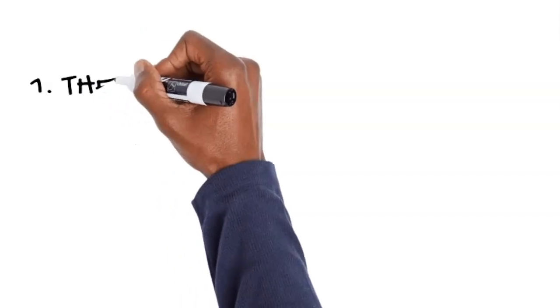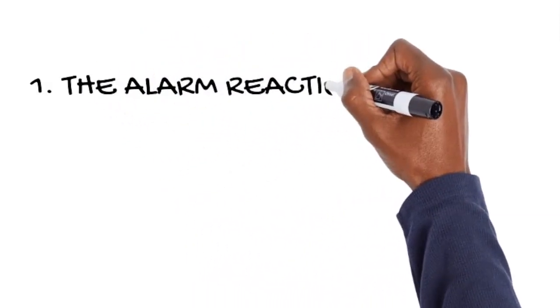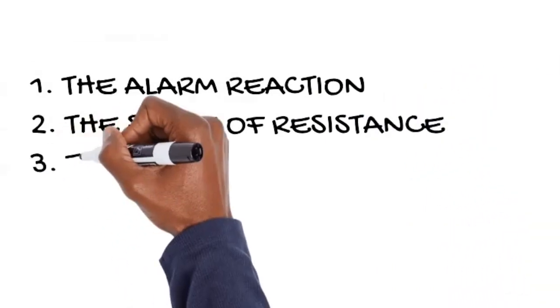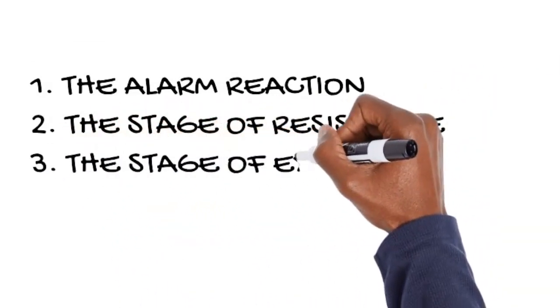Dr. Hansel argued that chronic stress can be divided into three phases. The alarm reaction phase, the stage of resistance, and the stage of exhaustion. The alarm reaction phase is when an individual is exposed to chronic stress. What happens is they are first taken off guard, resulting in the body sending out various signals resulting in this alarm reaction. Then an attempt to resist leads into the second phase, which is the stage of resistance.